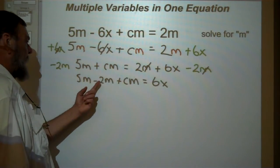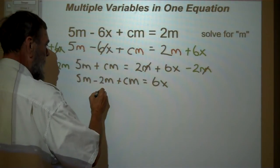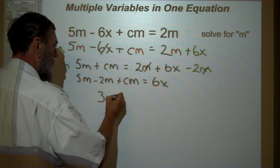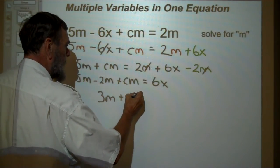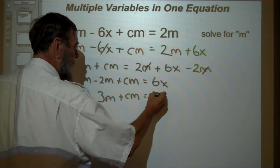Now what? Well, we can combine those two. We have 3m plus cm equals 6x.